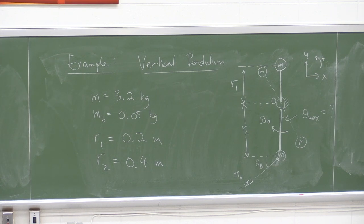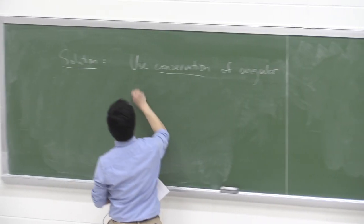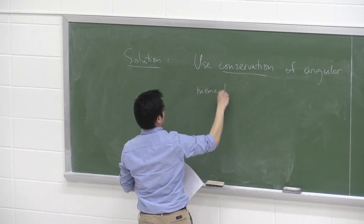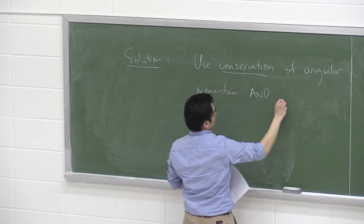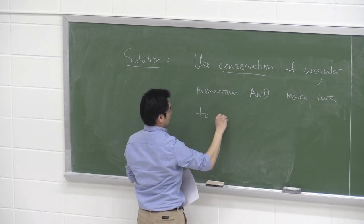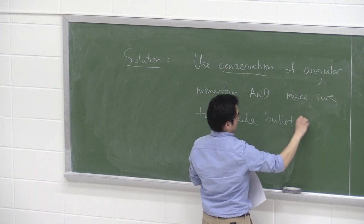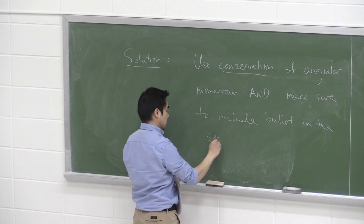The solution: to avoid figuring out the force of impact and the impact duration, use conservation of angular momentum and make sure to include the bullet in the system. That's the trick.